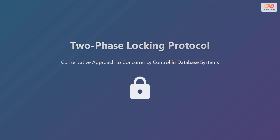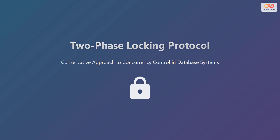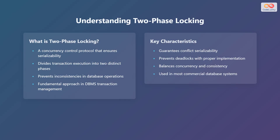In this presentation we will explore the two-phase locking protocol. It is a conservative approach to concurrency control in database systems. This method is crucial for maintaining data integrity and consistency when multiple transactions access the same database. The two-phase locking protocol is a fundamental approach in database management system transaction management.